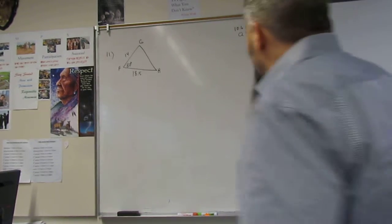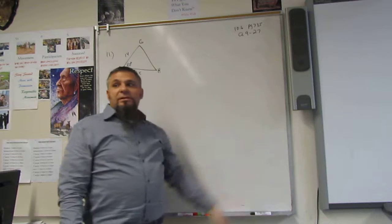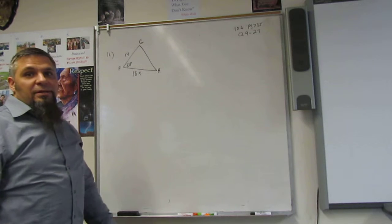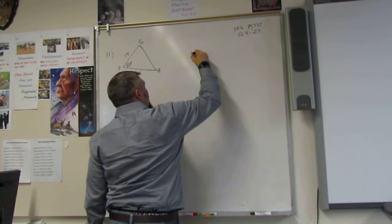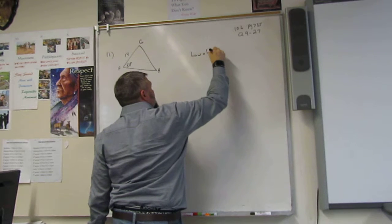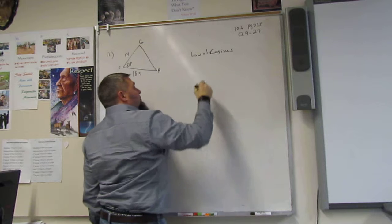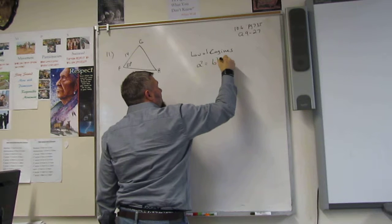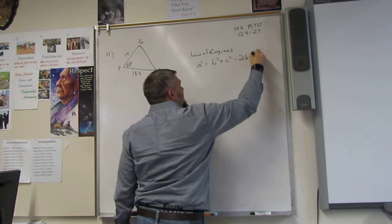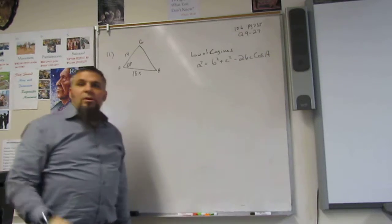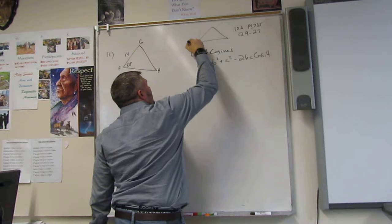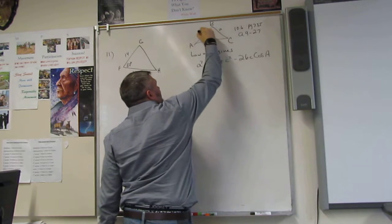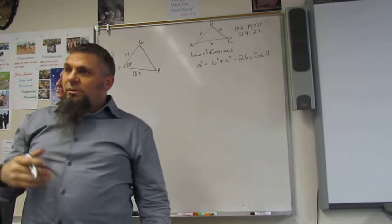Okay, we got chapter 106, page 735, algebra 2. We're doing law of cosines. Law of cosines is where we have a squared is equal to b squared plus c squared minus 2bc cosine a, whereas a and little a, b and little b, c and little c are your angles and your sides.